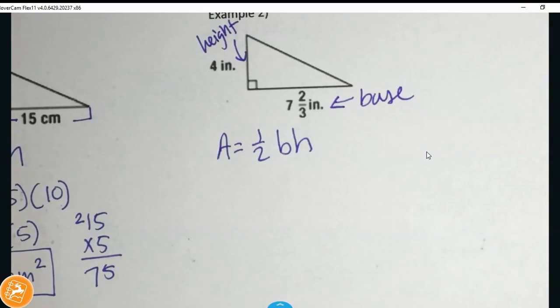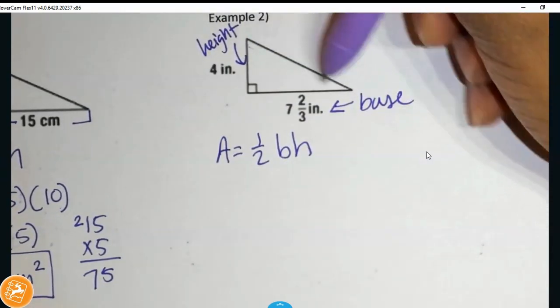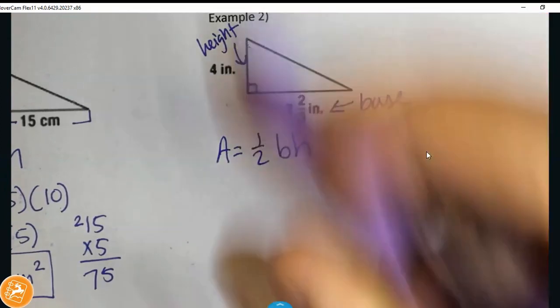Now, it could be, you could have said one's the height, one's the base. But either way, we know those are the two measurements we want. We don't want this length. Even if they gave it to us, we don't want to use that. That's not our base or our length.